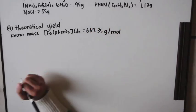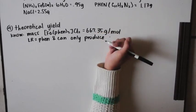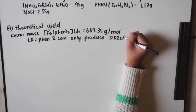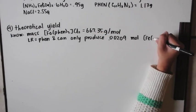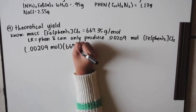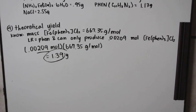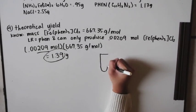phen chloride salt has a mass of 667.35 grams per mole, and you know that your limiting reagent is phen, and it can only produce 0.00209 of this. So you multiply the two numbers together, and you would end up with your theoretical yield in grams, which is 1.39 grams.